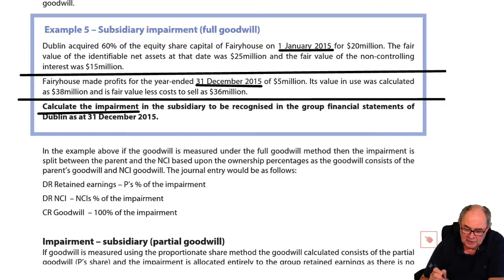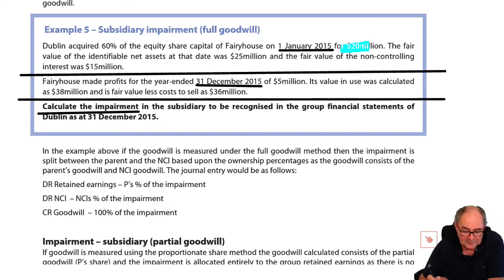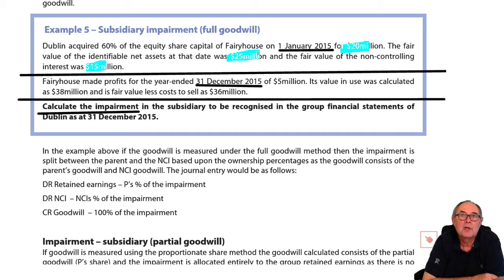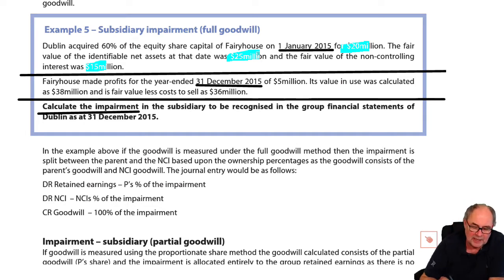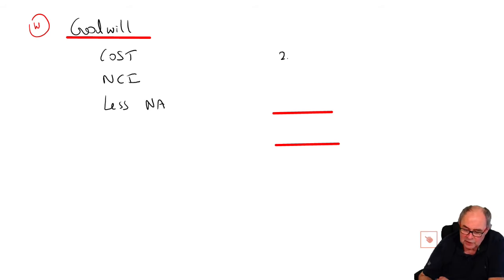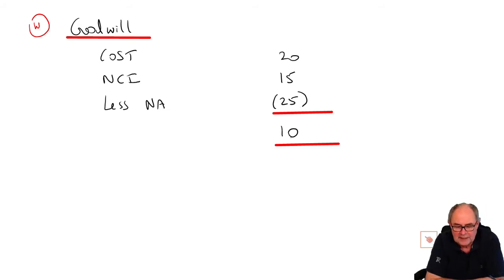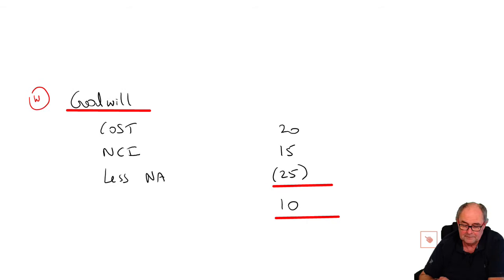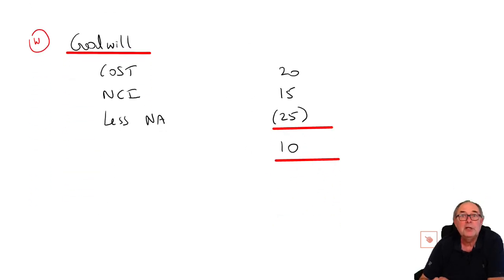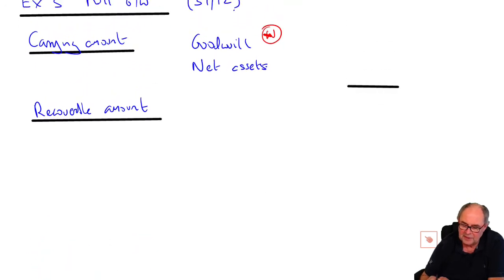Let's hoover up those numbers. The cost was 20, the NCI was 15, and the net assets were 25. So: 20 plus 15 minus 25 - goodwill is 10. That's the position at the start of the year, so the goodwill would be in the accounts at 10. The carrying amount of the goodwill is 10.